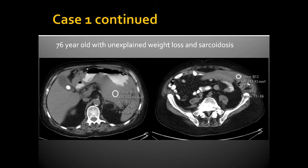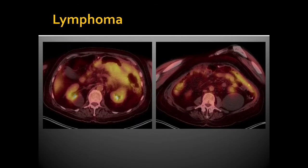Later that day, the same radiologist reads a CT exam performed in a 76-year-old with unexplained weight loss and sarcoidosis. He identifies very similar appearing perigastric hematoma extending into the omentum, calls the referring physician, and recommends a CT angiogram. However, the patient has a PET CT three weeks later, and this is diagnosed as lymphoma.